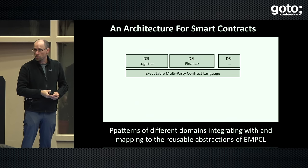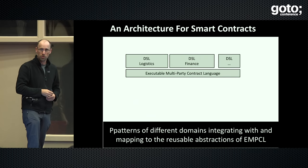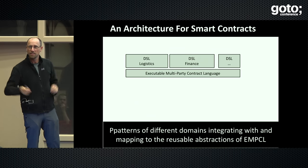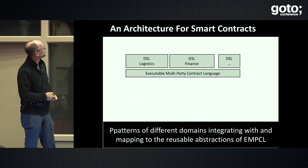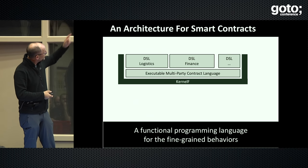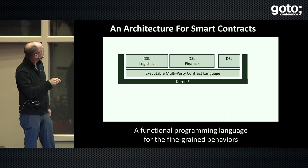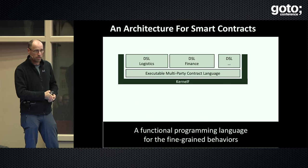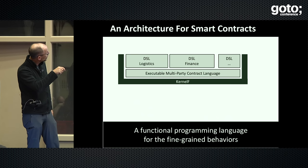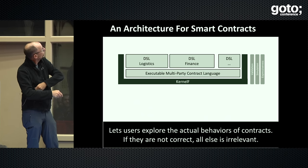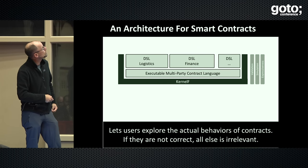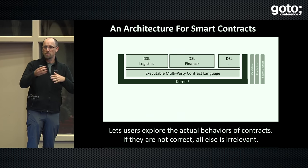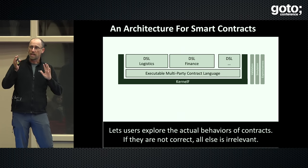On top of EMPCL you could imagine building various specific languages for contracts in certain domains. I'll show an example from logistics that a friend of mine has prototyped. We have built languages in the finance space but they were not based on this. There is also a research project in Hamburg going on where the Hamburg logistics community approached the IT community for help — IBM is trying to make them use their own blockchain thing and they want something open. EMPCL is built on a language called Kernel F, a functional programming language implemented in MPS. It's highly extensible.